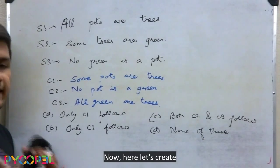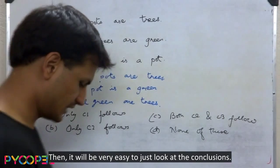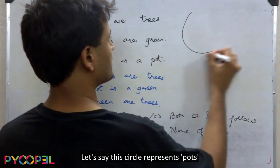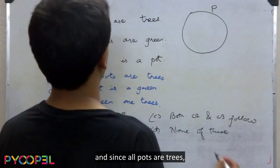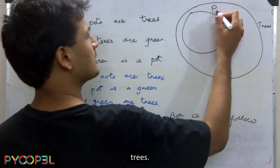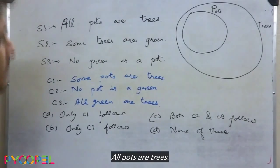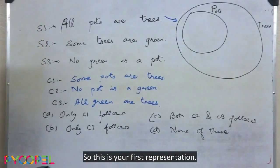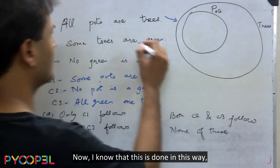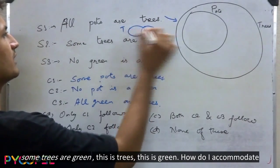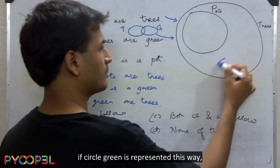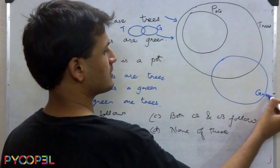Let's create the set representation for three statements and then look at the conclusions. Statement one: 'All pots are trees.' Let's say this circle represents pots. Since all pots are trees, this circle has to sit inside a bigger circle that says trees. So the pot circle is entirely within the trees circle — that is the first representation.